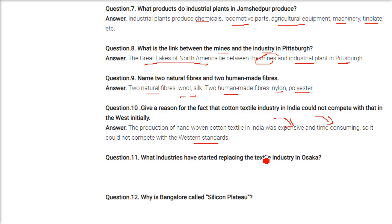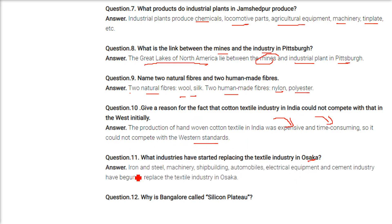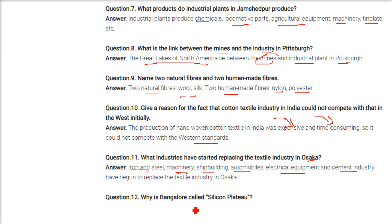What industries have started replacing the textile industries in Osaka? Iron and steel industry, machinery, shipbuilding, automobiles, electrical equipment, and cement industry have begun to replace the textile industry in Osaka.